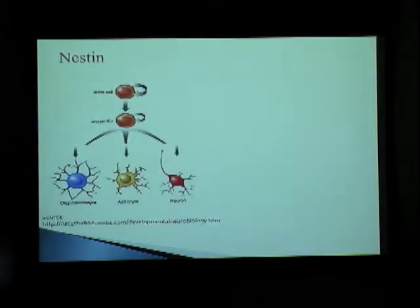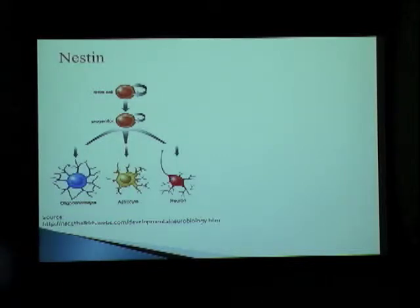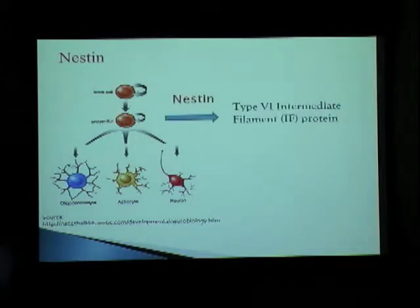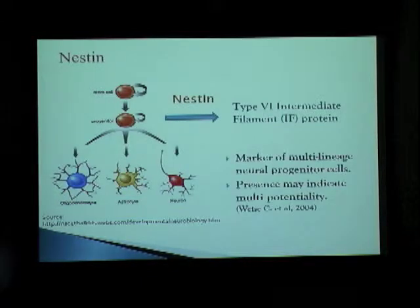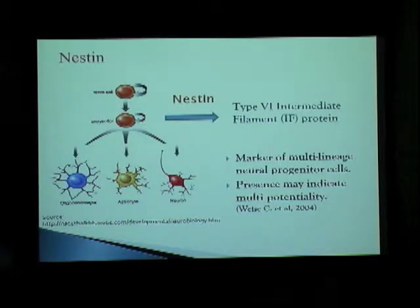Now I'll talk about nestin. The image you see here is a normal progression of a stem cell towards a mature, differentiated neural cell. Nestin is so important because it's been observed to be expressed at the progenitor cell level. It's a type 6 intermediate filament. And so why is this important? Because as nestin is expressed at the progenitor cell level, it is a marker of multilineage neural progenitor cells, and its presence may indicate multipotentiality.